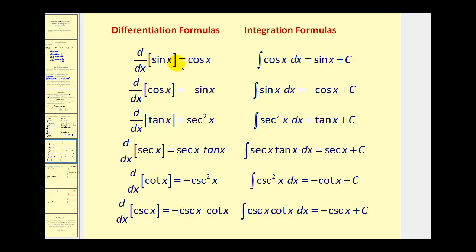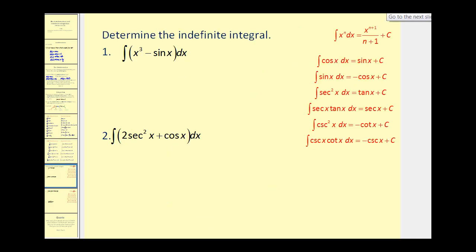We want to determine the indefinite integral of x cubed minus sine x. Well, to find the anti-derivative of x cubed, we have to apply the power rule from the previous video. So we would add one to the exponent and then divide by four minus the anti-derivative of sine x is equal to negative cosine x, and then plus c. So if we clean this up, this would be x to the fourth divided by four plus cosine x plus c.